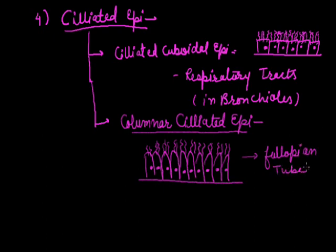Here, cilia are helpful in the movement of ovum throughout the duct. Now some special modifications of epithelial tissue are also found. The first and main functional modification of epithelial tissue is called pseudostratified epithelium.